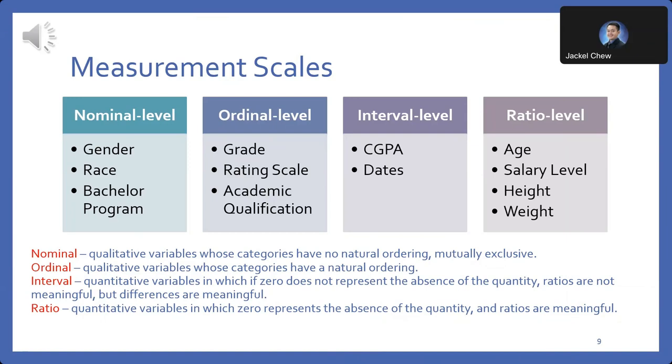Ratio scales involve quantitative variables where zero represents the absence of the quantity being measured and ratios between values are meaningful. Common examples include height, weight and income. For instance, a height of zero indicates no height and a ratio of 2 to 1 in weight means one object is twice as heavy as another.